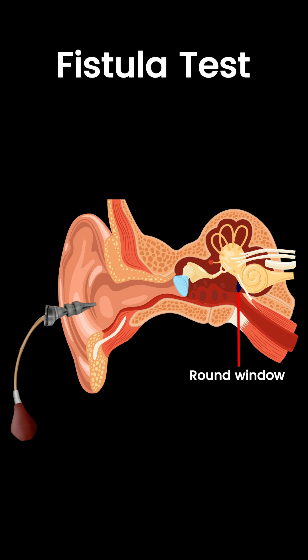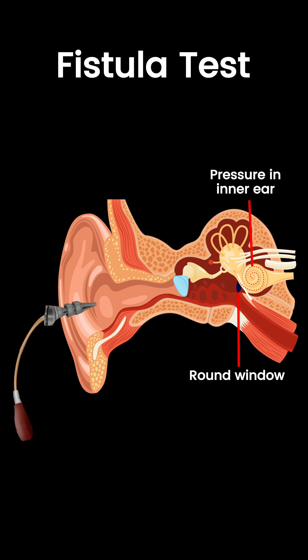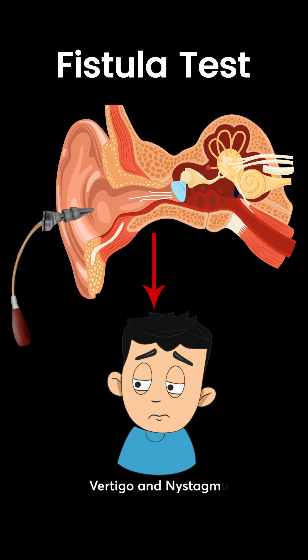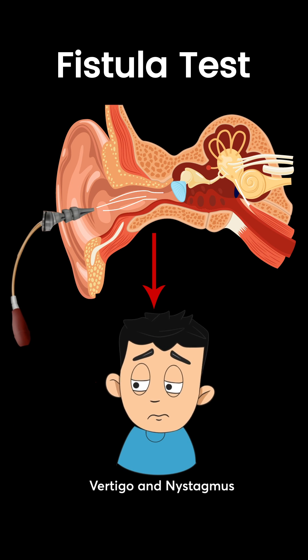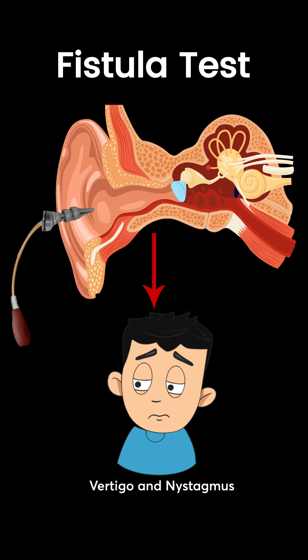But if, because of cholesteatoma or any other disease, there is some communication between the middle ear and the inner ear, the pressure will go from the middle ear to the inner ear, resulting in stimulation of the lateral semicircular canal or the labyrinth, and hence the patient will experience vertigo and nystagmus. Fistula means communication — so if there is a communication between the middle ear and the inner ear, we say the fistula test is positive.